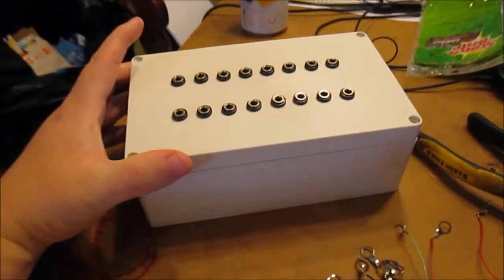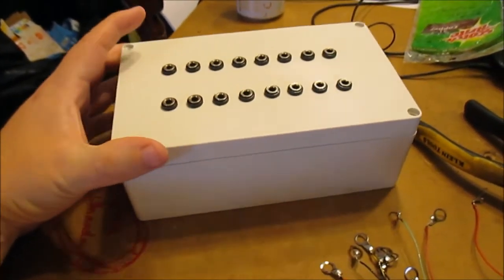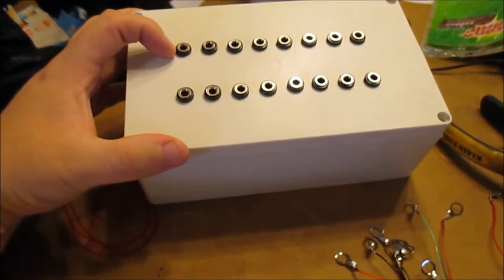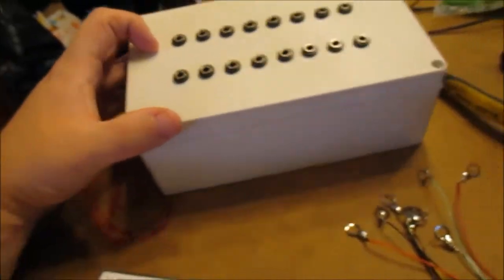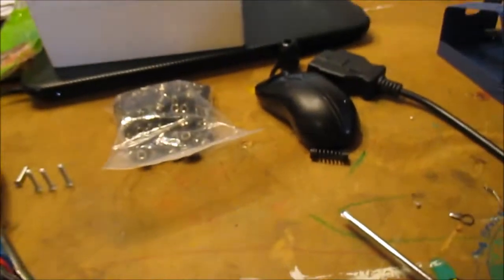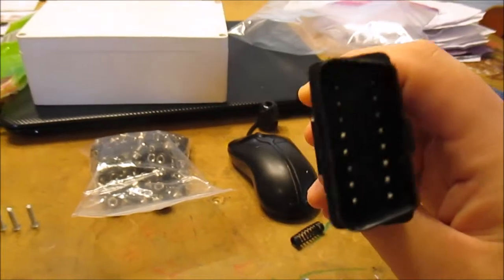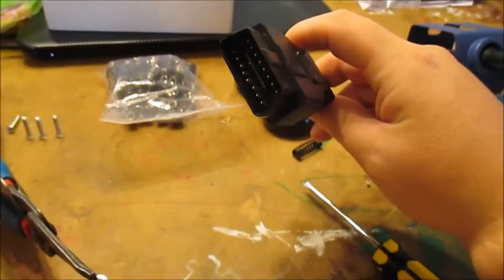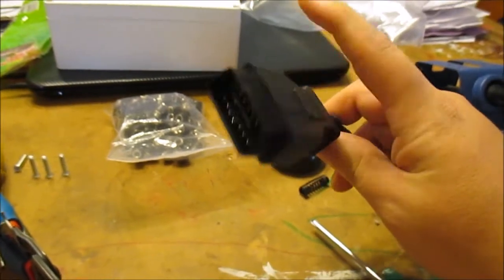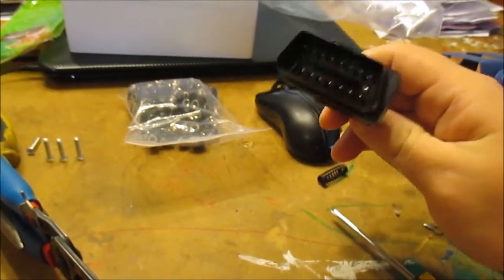Let me show you what I'm working on here. I'm trying to make a DLC connector breakout box. I took a standard OBD2 connector - I actually cut this off of one of my old scan tools that doesn't work anymore. But you can buy these cables on eBay for a couple bucks.